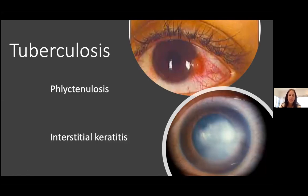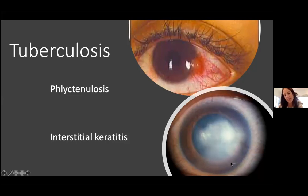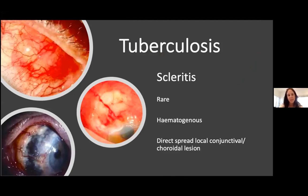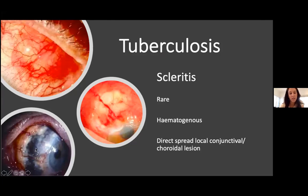Starting with TB: phlyctenulosis is a small white nodule that can form at the limbus or conjunctiva associated with intense hyperemia. It can be caused by cell-mediated response to Staph aureus, but we must always work up these patients for TB. Interstitial keratitis involves the stromal part of the cornea becoming very edematous and vascularized — a very poor prognostic factor for corneal rehabilitation. Scleritis with TB is difficult to diagnose; it's often sectoral or nodular and may arise from hematogenous or direct spread. It can become necrotizing — going on to scleromalacia perforans — which is vision-threatening and must be managed aggressively.